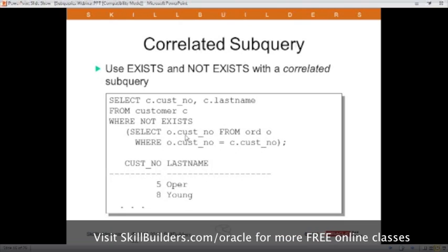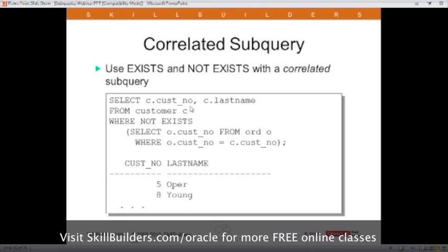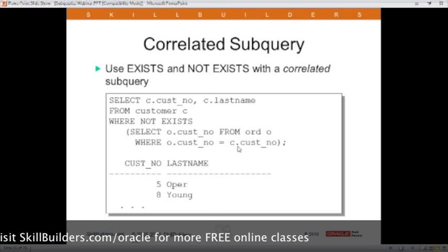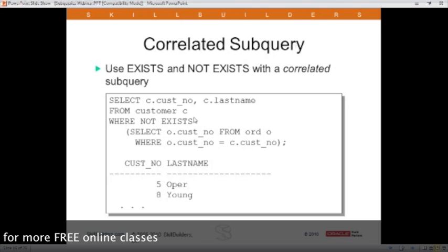Notice inside the subquery, I'm referencing the C table here, the customer table dot CUSNO. So this is a correlated subquery because in the subquery, I'm referencing a column from the outer query. All I'm really asking for in this one is select all customers that don't exist in the order table. And that's our not exist.